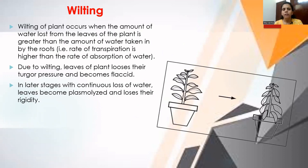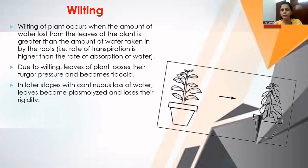Consider a plant where the temperature is very high or light intensity is high. The leaves open their stomata so more light can enter for photosynthesis. Under these conditions, the plant will perform transpiration at a faster rate — the rate of transpiration will be very high.